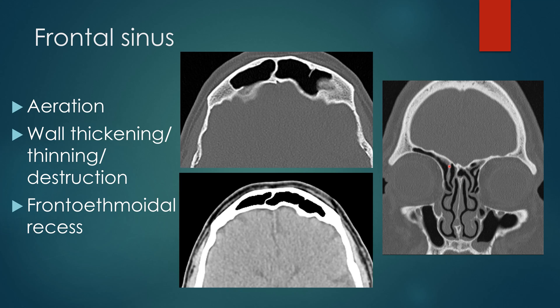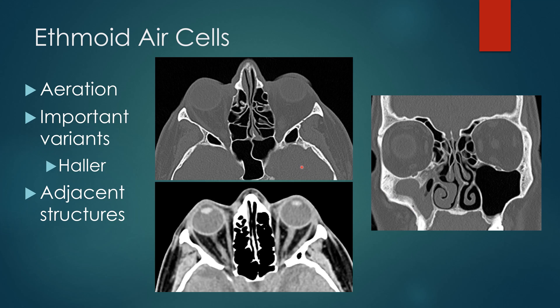Here you can see there's minimal mucosal thickening at the frontoethmoidal recesses. For the ethmoid air cells, you discuss aeration — is there mild mucosal thickening, is it more anterior or posterior, are there multiple opacified ethmoid air cells? Important variants include the Haller air cell, which is an inferoorbital ethmoid air cell. This can result in impaired drainage of the maxillary sinus as it changes the anatomy of the osteomeatal complex, changing its geometry and potentially causing chronic obstruction.